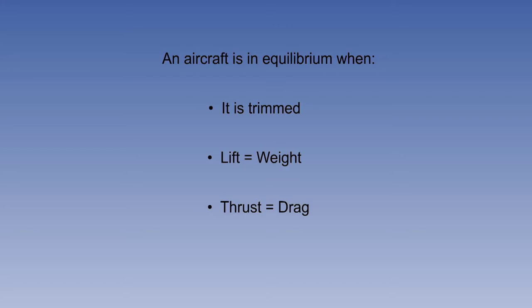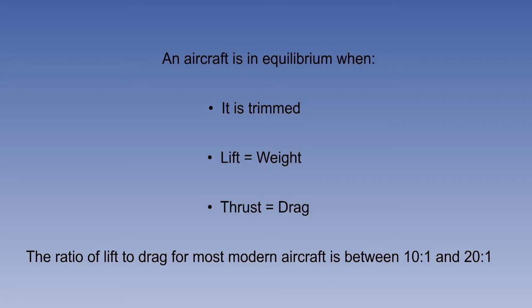The proportion of the lift force to the drag force, known as the lift-drag ratio, for most modern aircraft is between 10 and 20 to 1. In simple terms, this means that lift is 10 to 20 times greater than drag. The lines of action of thrust and drag usually lie fairly close together, so the moment of this couple is small and will be disregarded for this study.